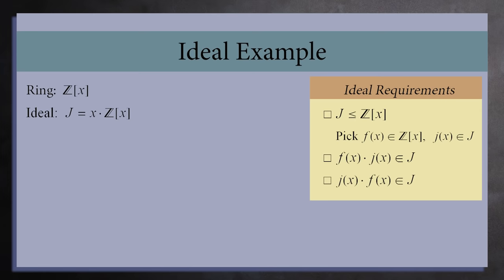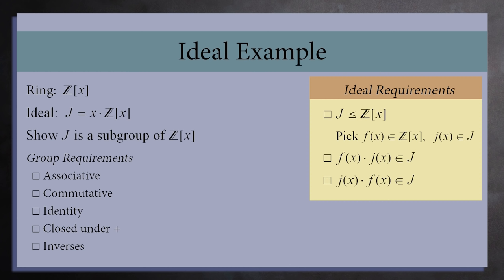Let's check. We first need to show that j is a subgroup of R. The associative and commutative properties are inherited from the ring. It has an identity element, since zero is a polynomial with constant term zero.